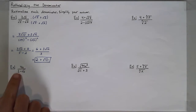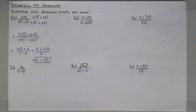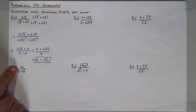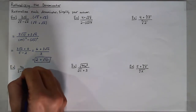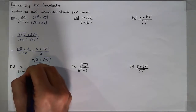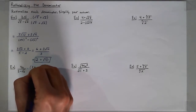Next I have 4x over 3 minus the square root of 6. Even if the numerator has a variable in it, the process is still the same. We will multiply the numerator and denominator by the conjugate of the denominator.